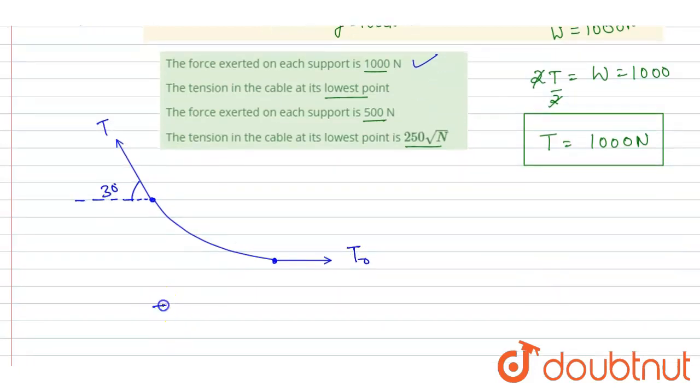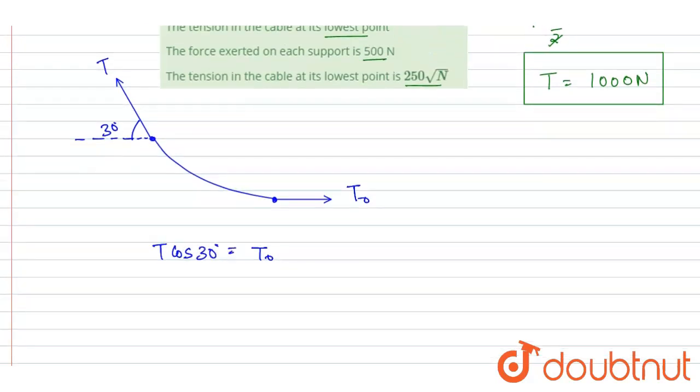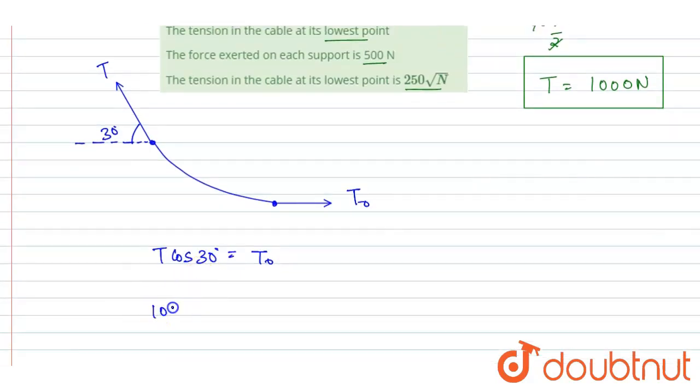So I will write T cos 30 degrees equals T₀. Put the value of T: cos 30 is √3/2, and it will be equals to T₀, that is 500√3 newtons.